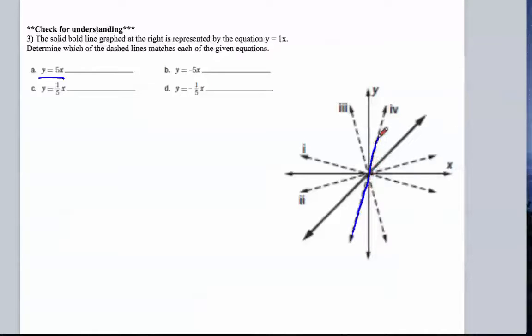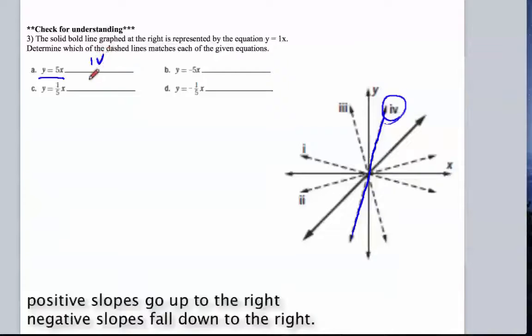The next one says negative 5x, so now we want something that slopes down and to the right, and again, the same steepness as the graph before. So, that's this one here, which looks like it's 3.